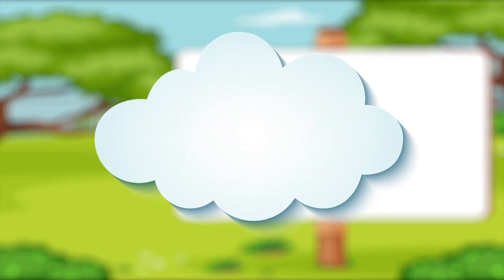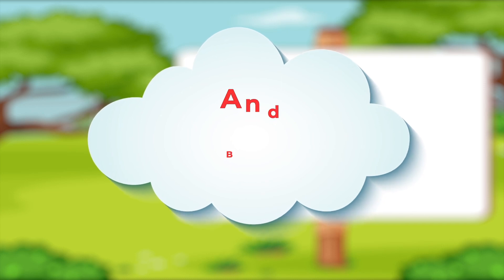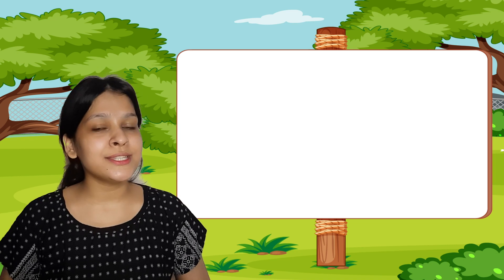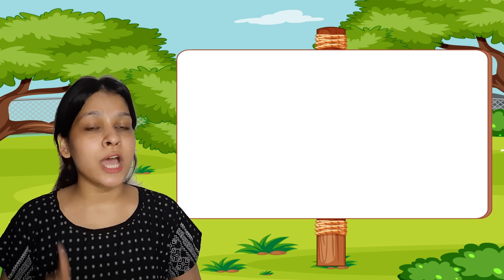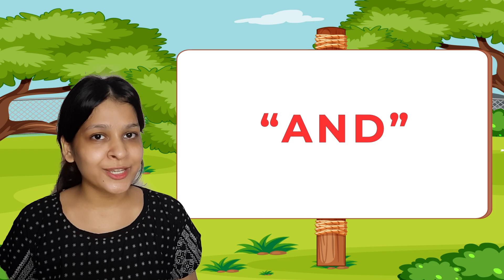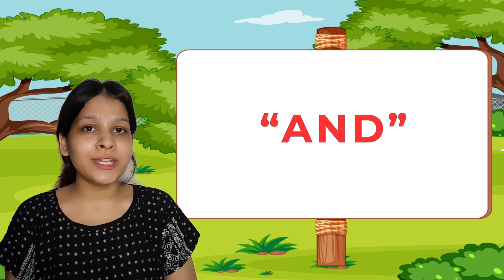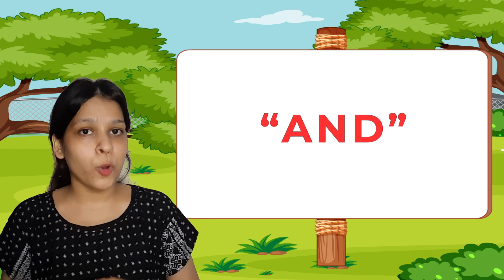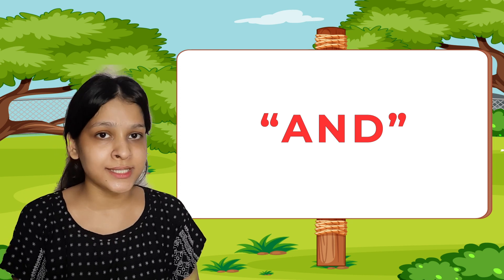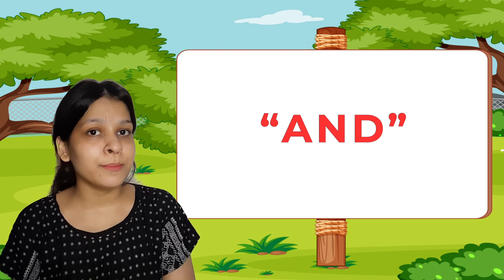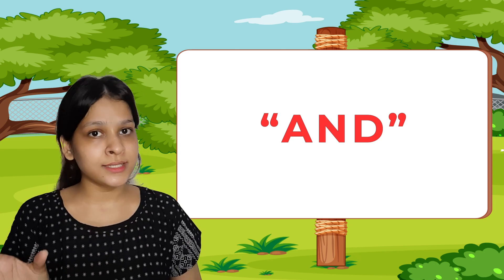We have three conjunctions: and, but, and or. Let's talk about our first conjunction, which is 'and.' We use this conjunction when we have to portray a similar idea or we are talking about a similar thing in a sentence.